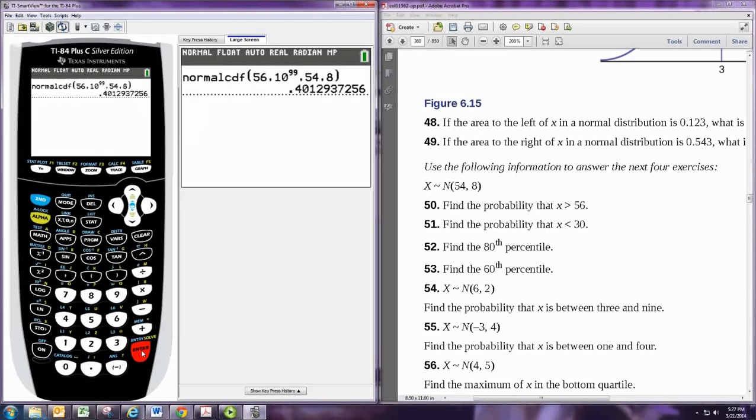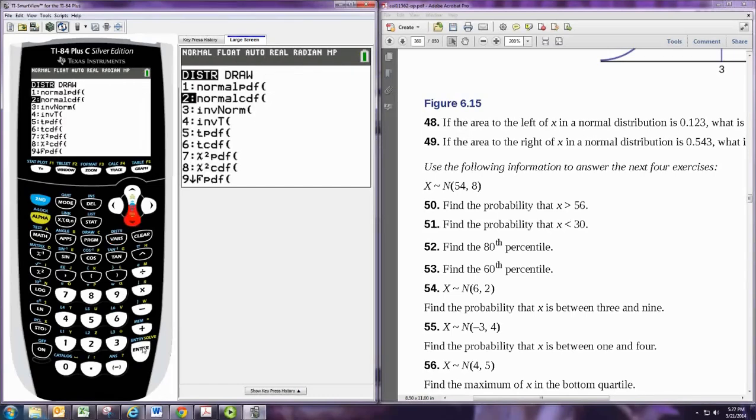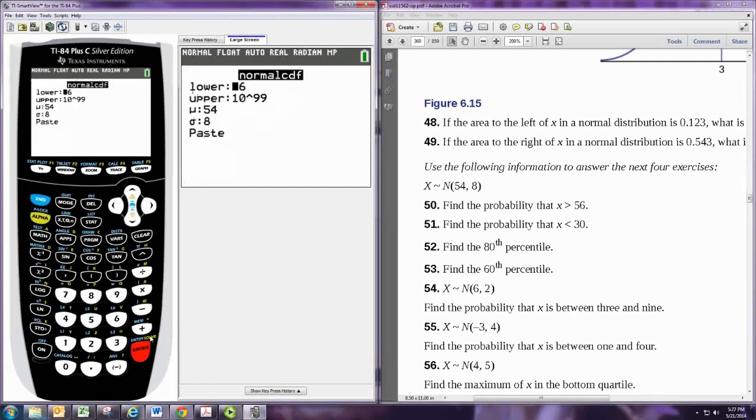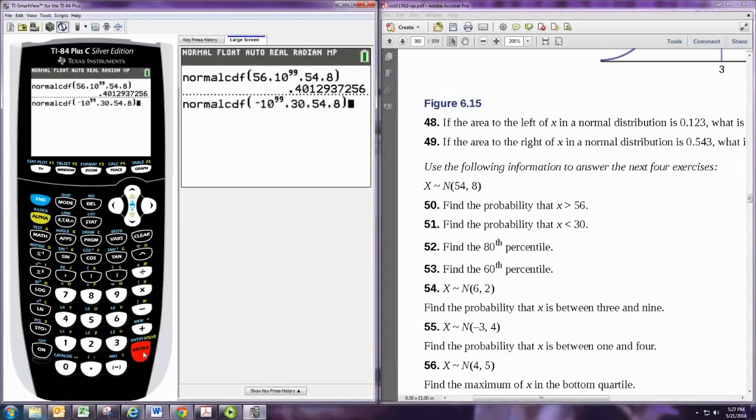Suppose we wanted a probability for x less than 30, which is problem 51. Again, normalcdf. This time we have no lower bound, so we use negative 10 to the 99. We do have an upper bound. We don't want any number larger than 30, so we put 30 in for the upper bound. The mean and standard deviation stay the same, and that's the probability that x is less than 30.